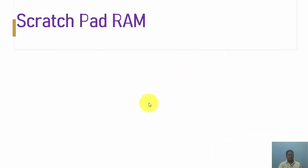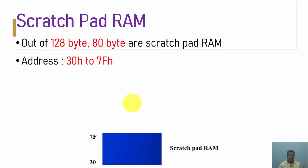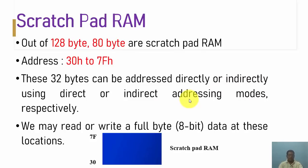The last one is scratch pad RAM. Out of the 128 bytes, 80 bytes are set aside as scratch pad RAM, with addresses from 30H to 7FH. The memory location starting from 30H and ending at 7FH is known as scratch pad RAM. These 80 bytes can be addressed directly or indirectly using direct or indirect addressing mode respectively. We may read or write a full 8-bit byte of data from these locations.